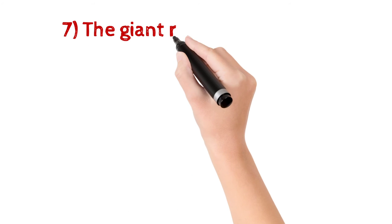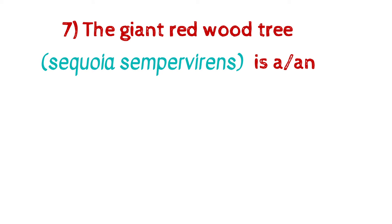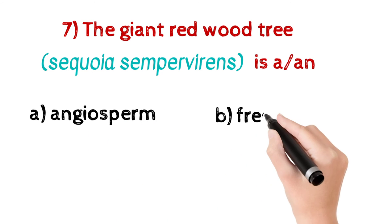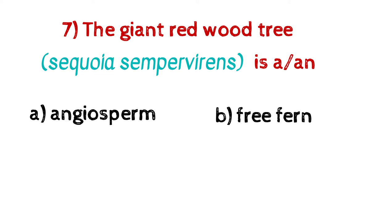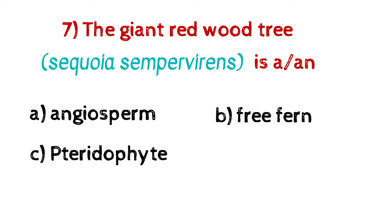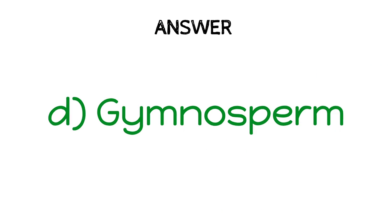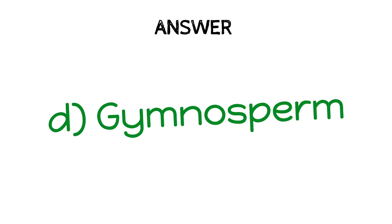Question number seven: the giant redwood tree Sequoia sempervirens is a — A) Angiosperm, B) Tree fern, C) Pteridophyte, D) Gymnosperm. And the answer is D) Gymnosperm.